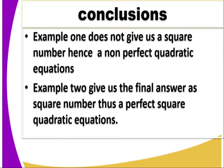Example 1, if you go to example 1, it does not give us a square number. Hence, a non-perfect quadratic equation. And in example 2, the final answer is the same. This one gives an answer as a square number. That is a perfect square quadratic expression. So you can be able to identify now a non-perfect quadratic equation and a perfect quadratic expression.